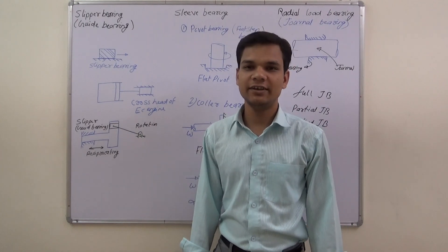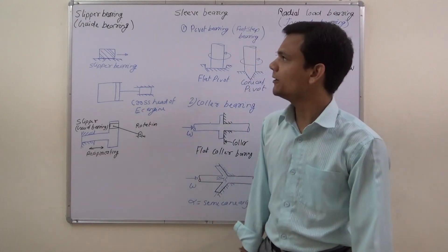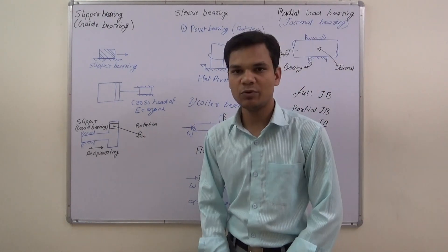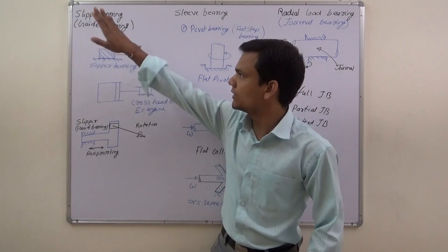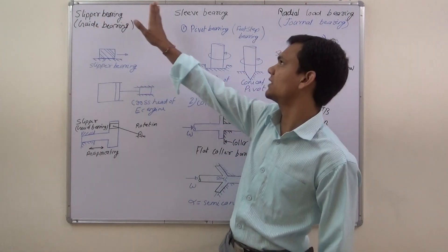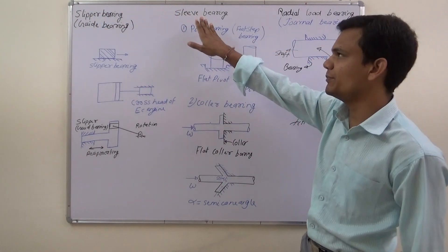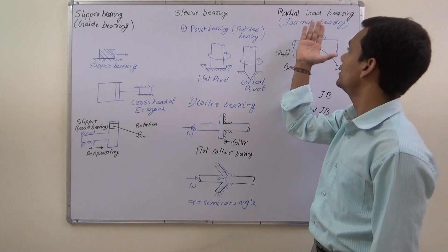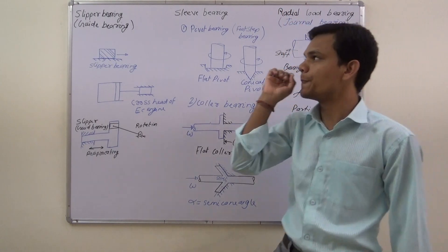Today's lecture is related to bearings. There are 3 types of bearings: the first one is slipper bearing, the second one is slip bearing, and the third one is radial load bearing.